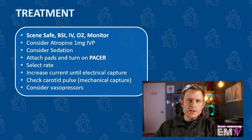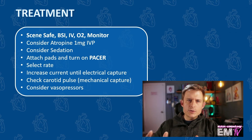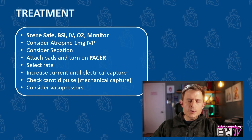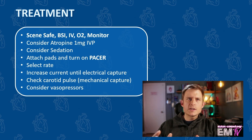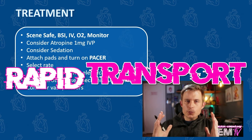I'll select my rate anywhere between 60 and 100 pulses per minute, and then I'll increase my current until I see electrical capture. I'll then check a carotid pulse to assure mechanical capture, and then to make sure I don't lose that capture during transport, I'll go ahead and increase my current 10mA more. I could then consider the administration of vasopressors for additional blood pressure management if needed, and then finally, rapid transport.